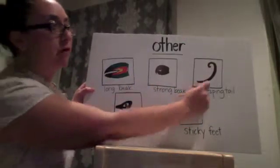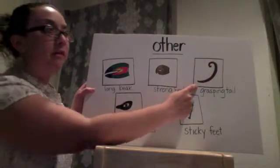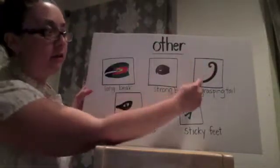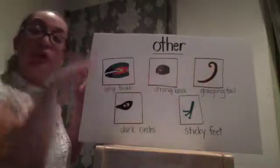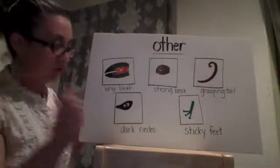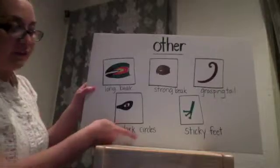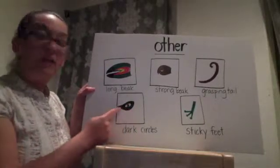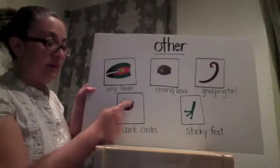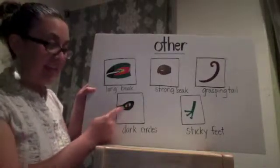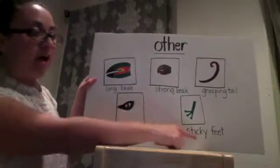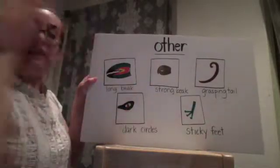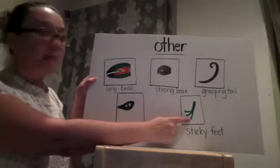Monkeys benefit from their grasping tail. Their tail is so strong, allowing them to hang on with their tail so that their hands are free to do other things. Sloths benefit from their dark circles around their eyes, which help them as shades help us on a sunny day. Frogs benefit from their sticky feet — when they jump from one leaf to another, they won't slide off.